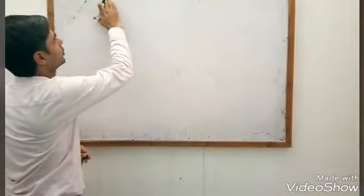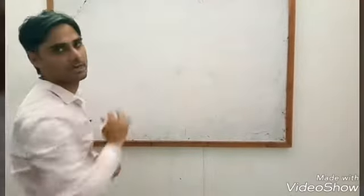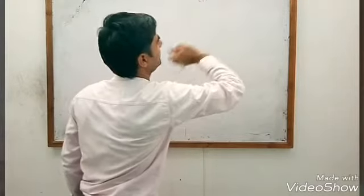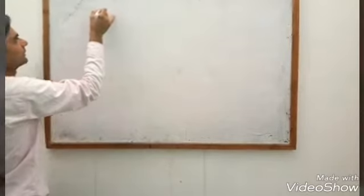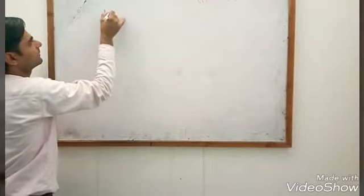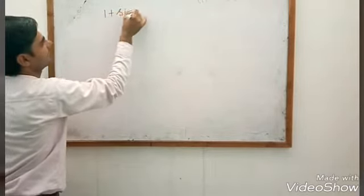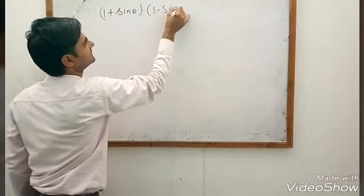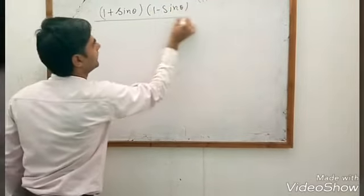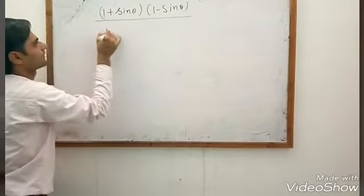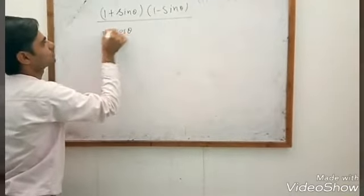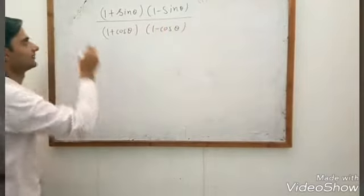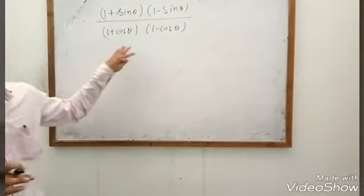Here it is given that cot θ is equal to 7 upon 8. We have to evaluate (1 + sin θ)(1 − sin θ) upon (1 + cos θ)(1 − cos θ).